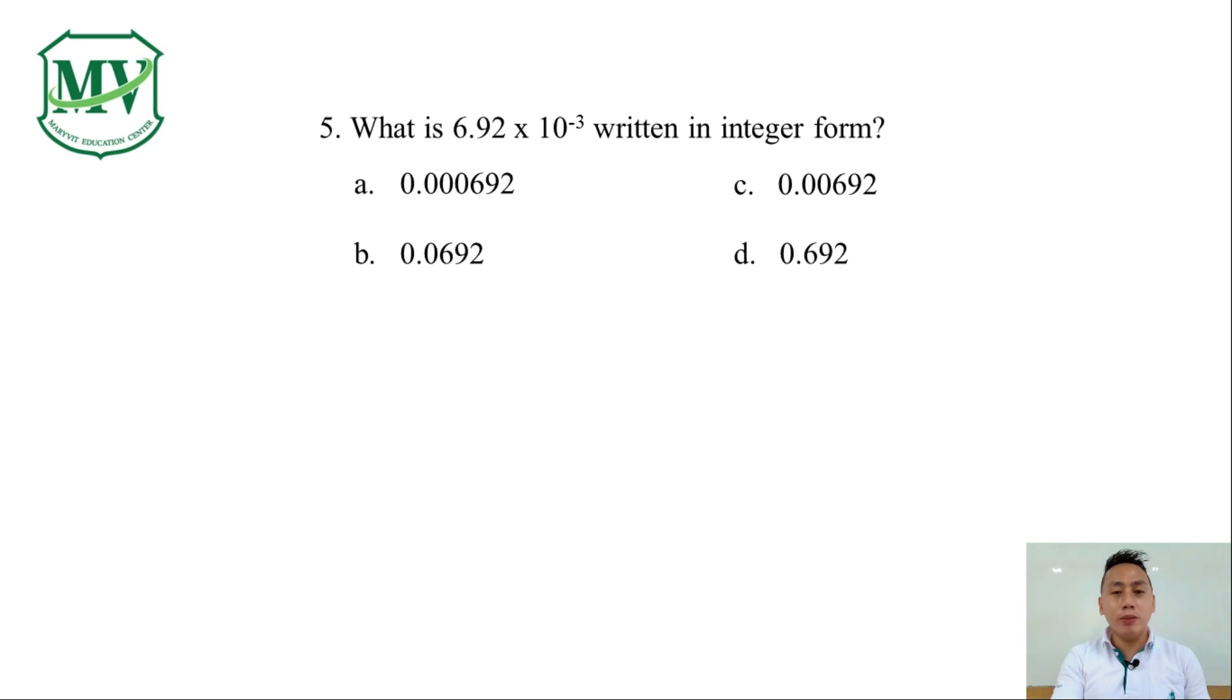Our exponents this time is negative so the answer must be less than one. However all of the choices are less than one. That means any of them can be the answer. Let's figure it out.